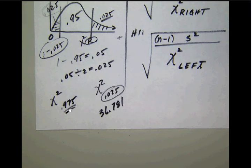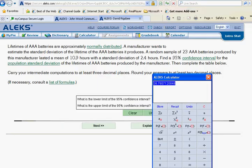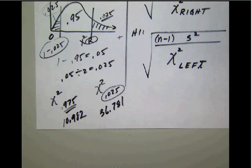We need the chi-square of 0.975 as well. Back to our ALEKS calculator, a quick way to do that is just click undo and then change just this number to 0.975. And calculate. That's going to give us 10.982, and so that is our chi-square left value, rounded to three places.